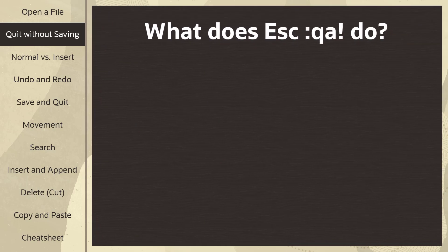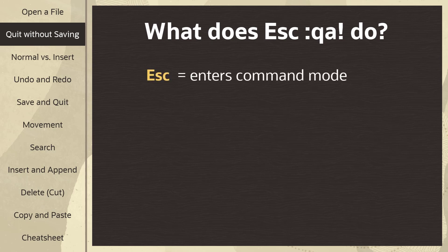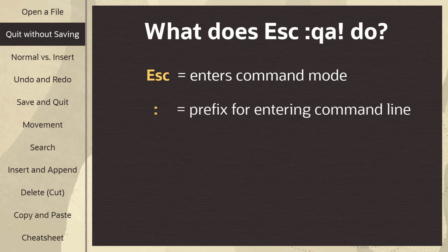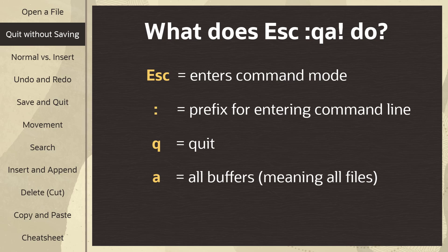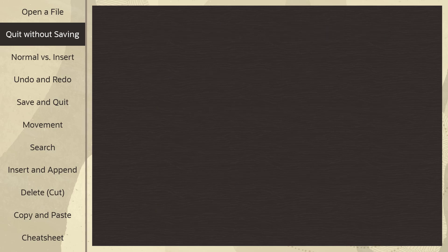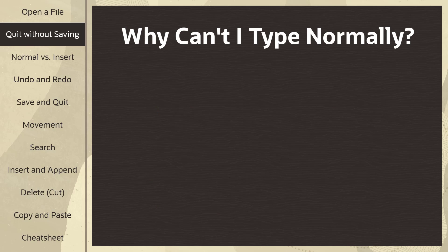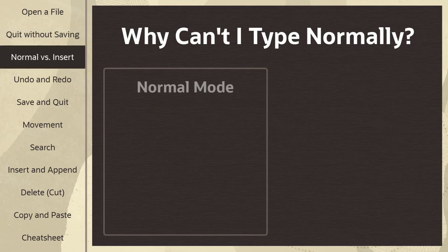But what does escape colon QA! do? Escape makes sure that you're in command mode. The colon is the prefix for entering command line. Q is short for quit. A stands for all buffers, meaning if you have multiple files open, it's going to close all of them, and the exclamation mark represents force, telling it to quit even if there were changes made. So why didn't typing like normal work? Well, Vim has two modes: normal mode, sometimes referred to as command mode, and insert mode.